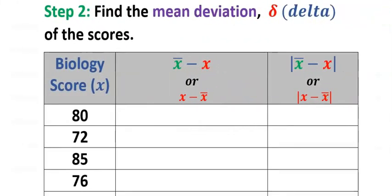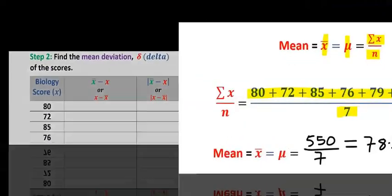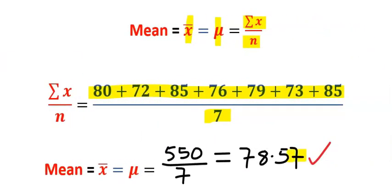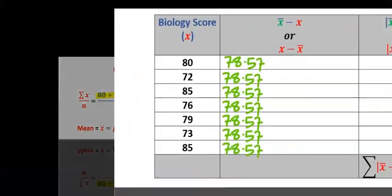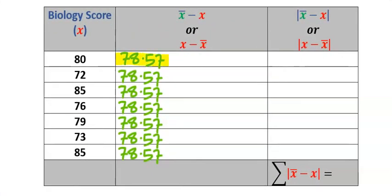However, in step two, the names of the students can be omitted during the analysis. The mean obtained was 78.57. Hence, each row, we have 78.57, which is the mean.